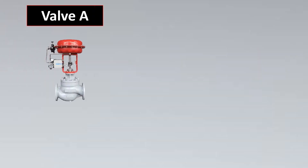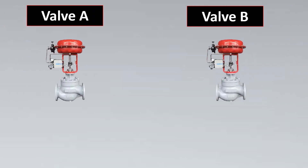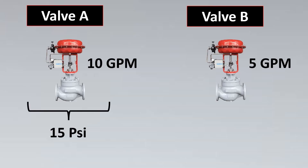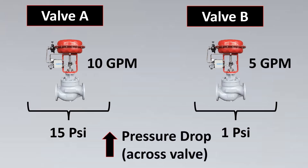As we had initially discussed, imagine valve A has a flow rate of 10 GPM and valve B has a flow rate of 5 GPM. We cannot say that valve A has a higher flow capacity, because both valves could be made of the exact same construction and same size, but the pressure drop across the first valve is 15 PSI while the pressure drop across the second valve is just 1 PSI. As you increase the pressure drop across a valve, the flow through it increases — so this higher flow is due to pressure drop, not valve size.